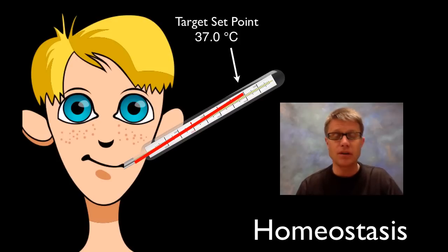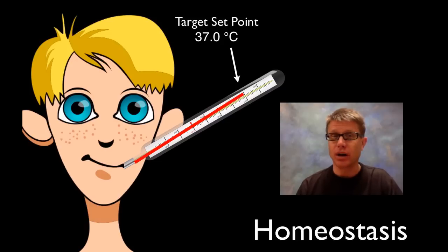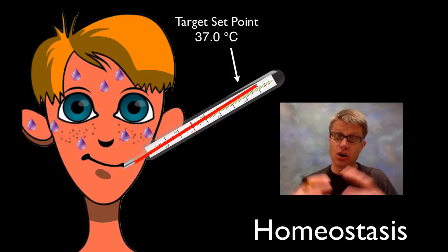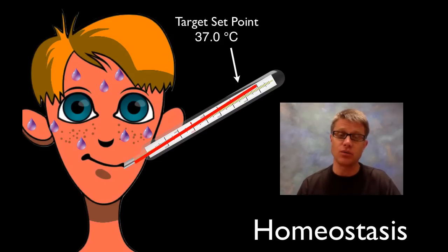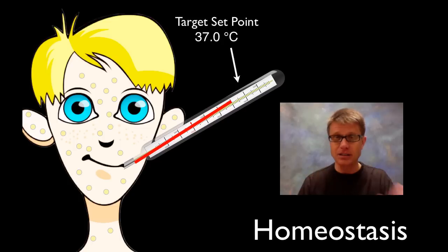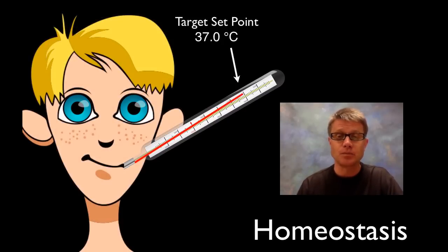Inside our body we have the same thing — a thermostat. It's the hypothalamus, right above the roof of your mouth, and it senses the temperature inside you, right around 37 degrees Celsius. If your temperature goes too high, your body reacts: it starts to sweat and you vasodilate, opening up capillaries near the surface to carry heat away. If it goes too low, you get goose bumps or vasoconstrict, holding heat near the body, and your temperature increases. This is a negative feedback loop and a great example of homeostasis.